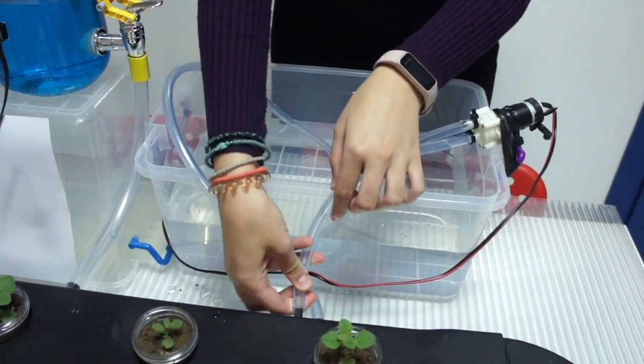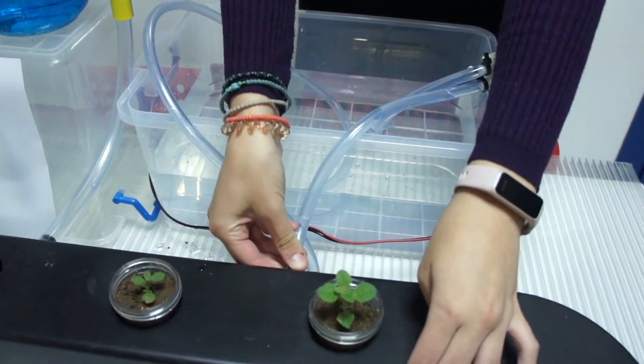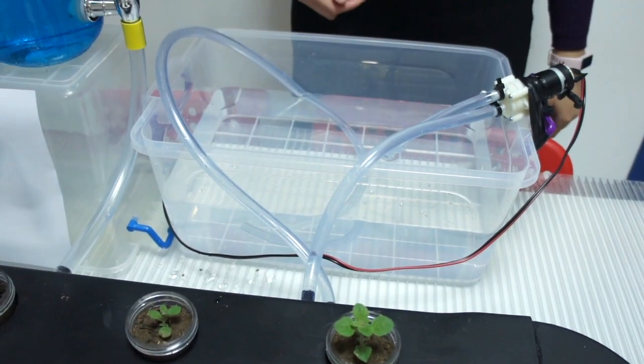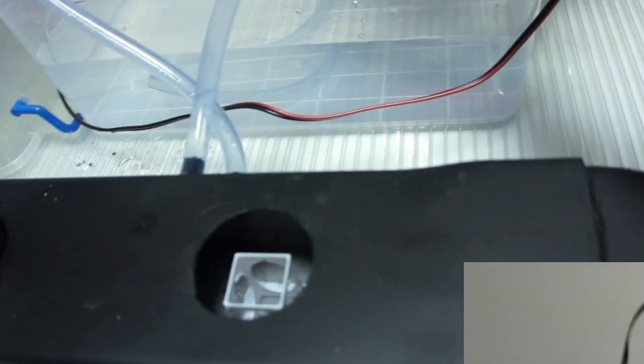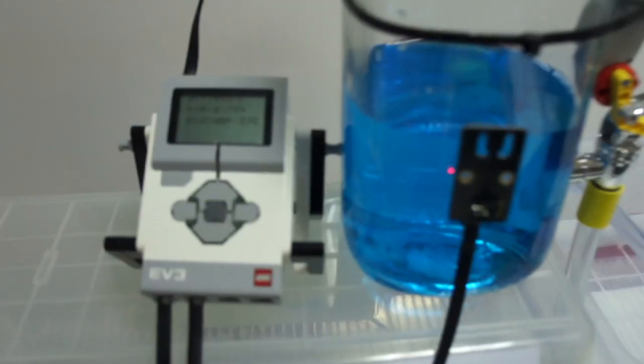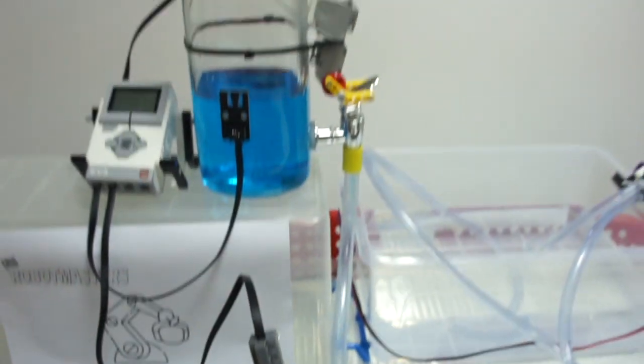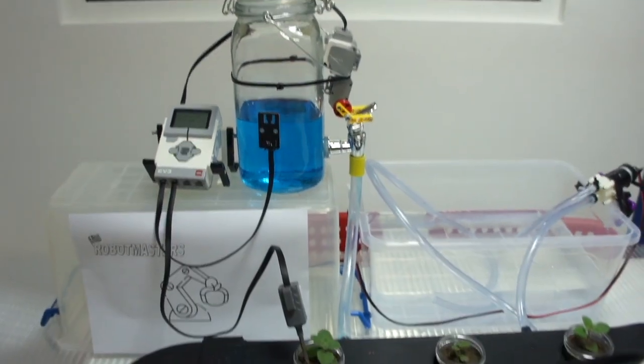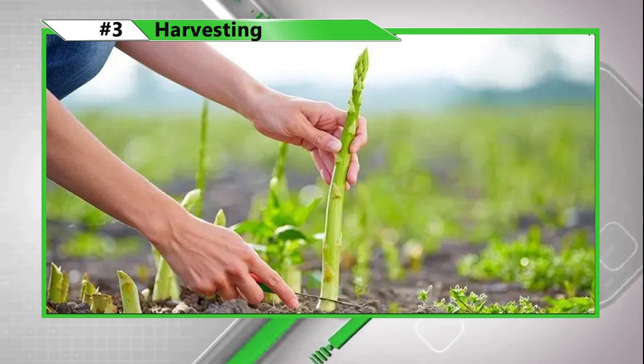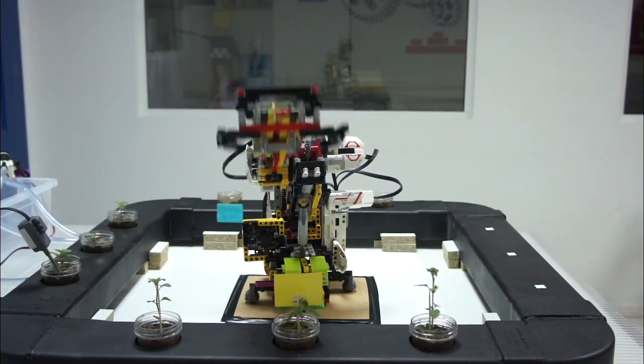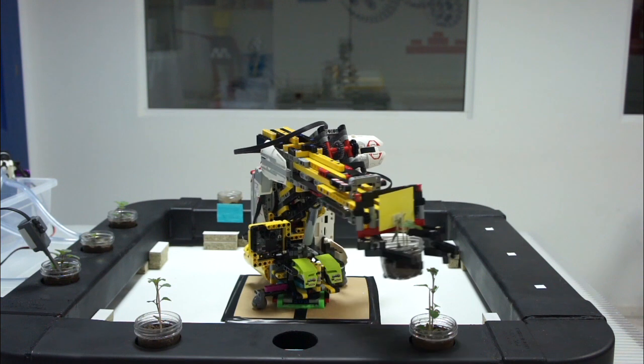In phase three, the robot finds the plants that are mature and harvests them.